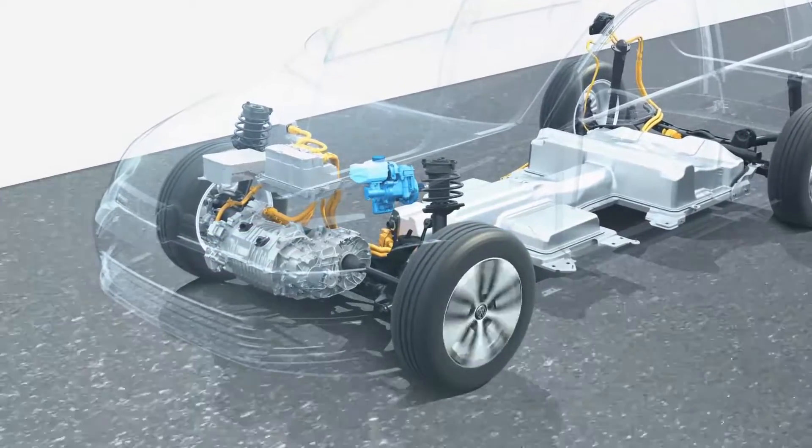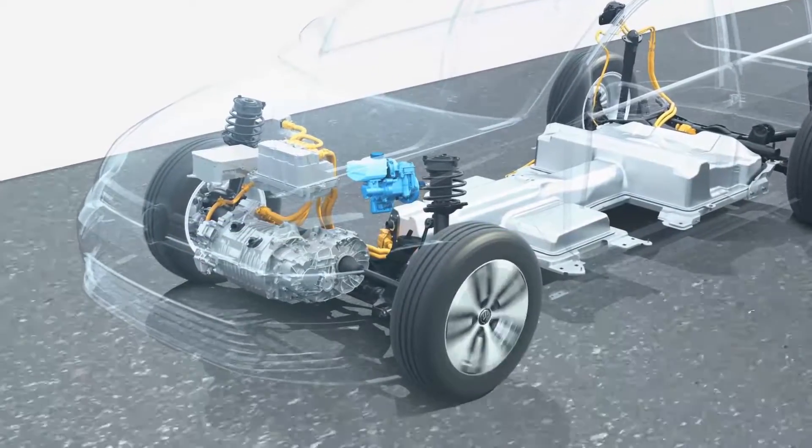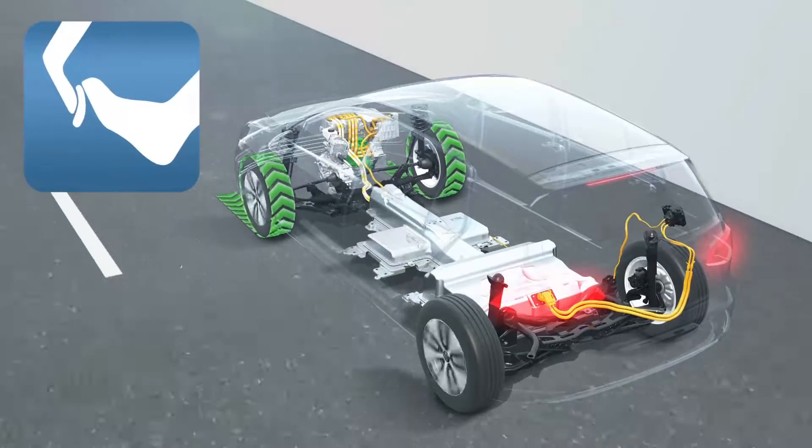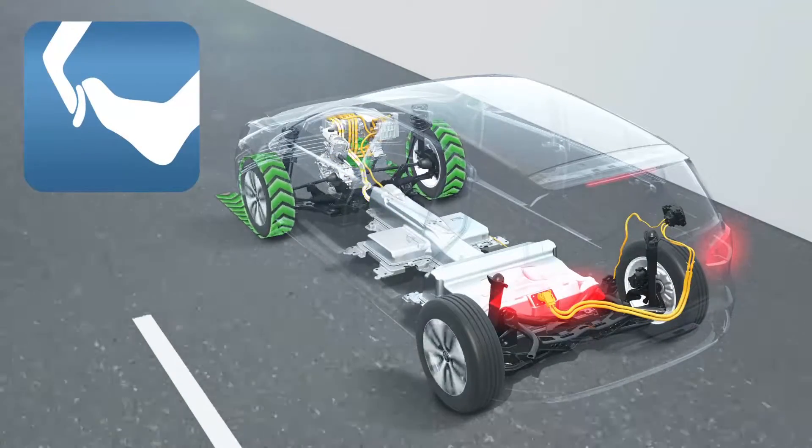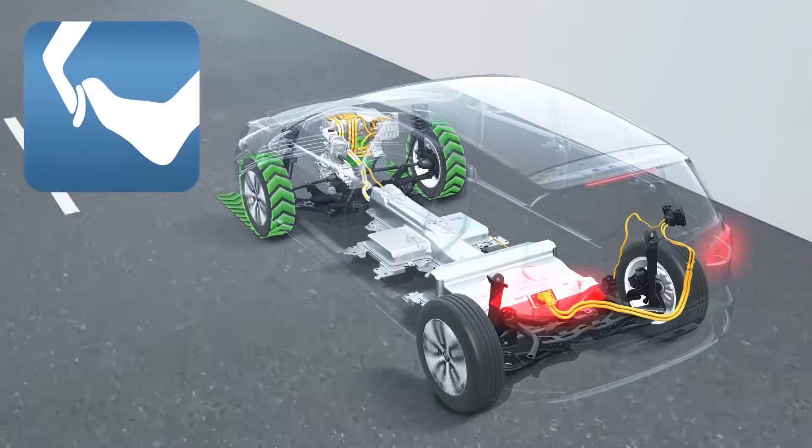The electromechanical brake booster coordinates the deceleration between the electric motor and the brake. Where energy usually gets lost when pressing the pedal, hybrid and electric cars absorb it.